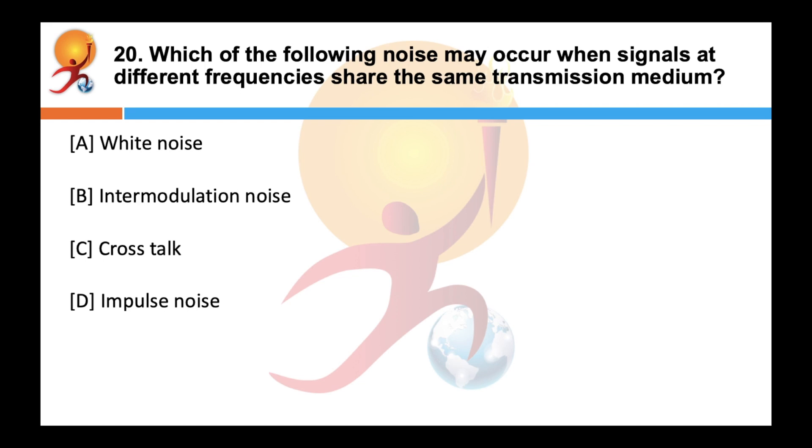Which of the following noise may occur when signals at different frequencies share the same transmission medium? The answer is intermodulation noise. Intermodulation noise is the result of modulation, demodulation, and any non-linear characteristics of the transmission medium.